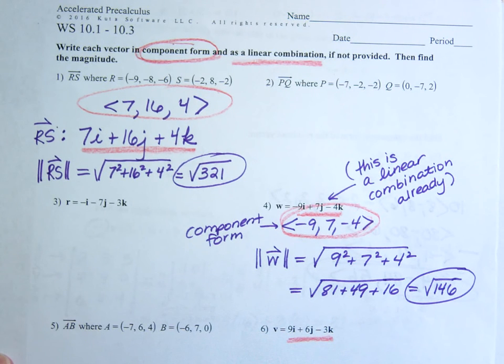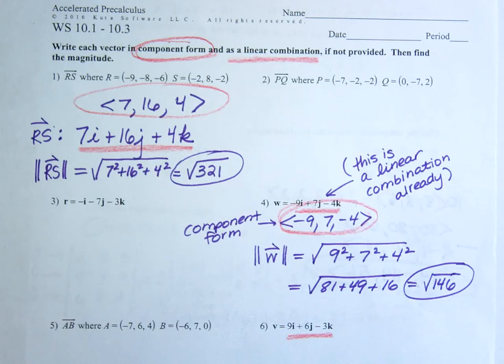Then find the magnitude. Remember, the magnitude is where you do basically Pythagorean theorem. So I think we're pretty good on that.